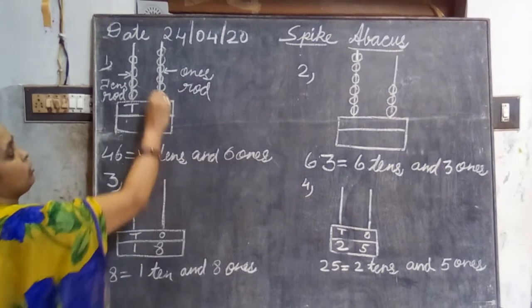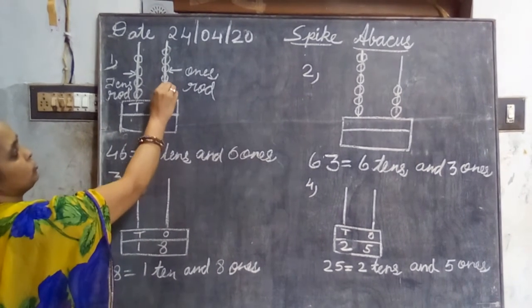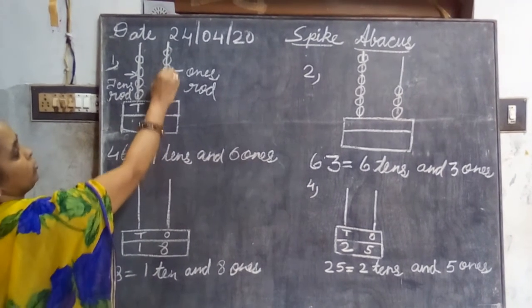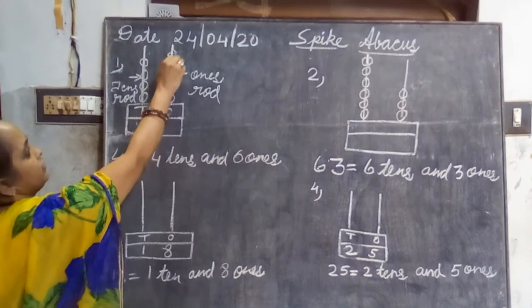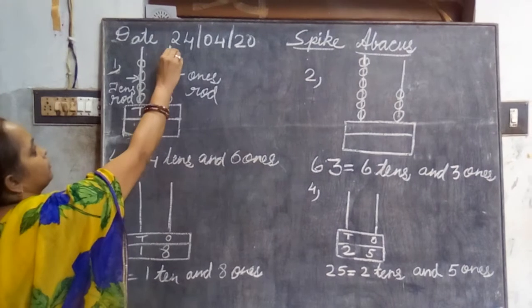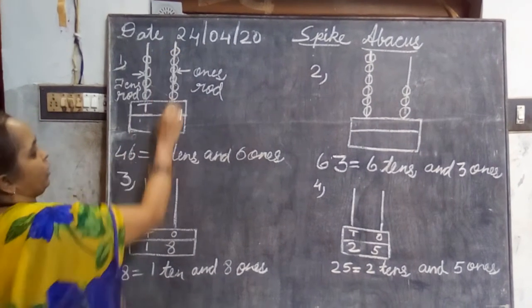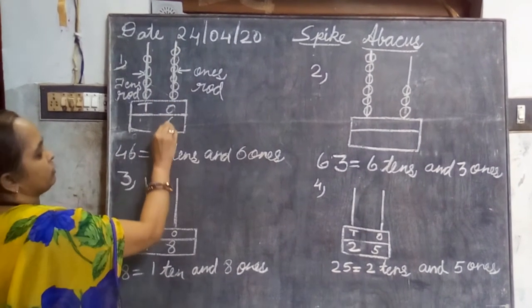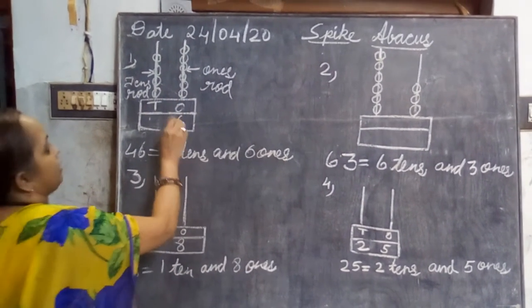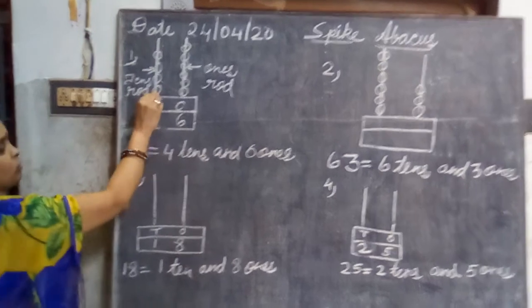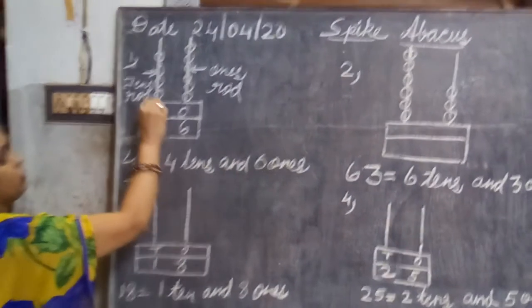Let us count with me: one, two, three, four, five and this one is six. So at ones place we will write six.